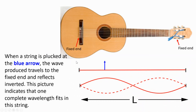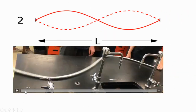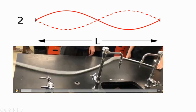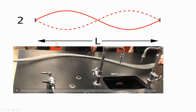When a string is plucked at the blue arrow, the wave produced travels to the fixed end and reflects inverted. This picture indicates that one complete wavelength fits in this string, and the traced one is the reflected wave. This illustration shows one complete wavelength fitting in this string.